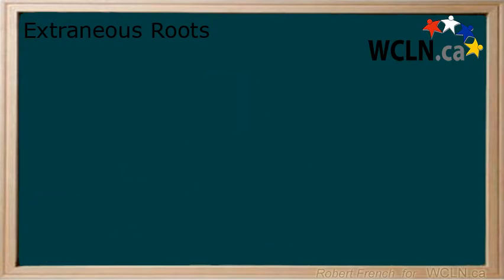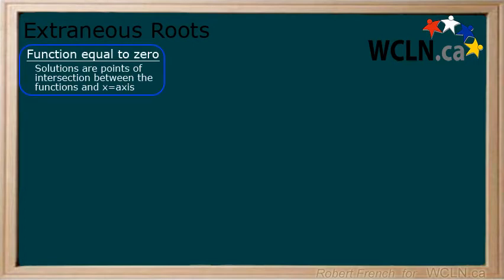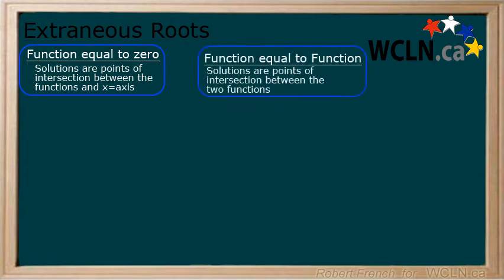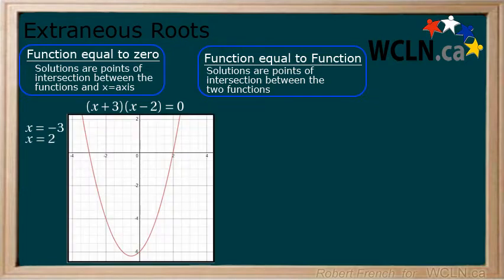Remember that a solution to an equation represents an intersection. First, if a function is equal to 0, then the solutions are where the function intersects the x-axis. Second, if the function is equal to another function which is not 0, then the solutions represent where the two functions intersect. The following equation has two solutions, x equals negative 3 and x equals 2. We can see by this graph that the function intersects the x-axis at x equals negative 3 and x equals 2.